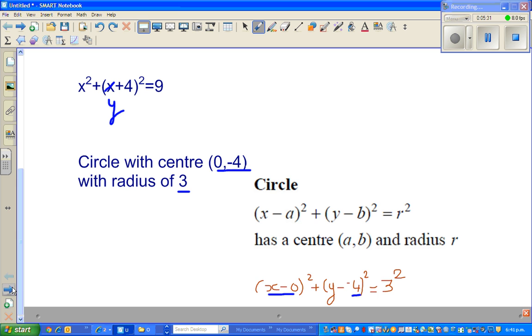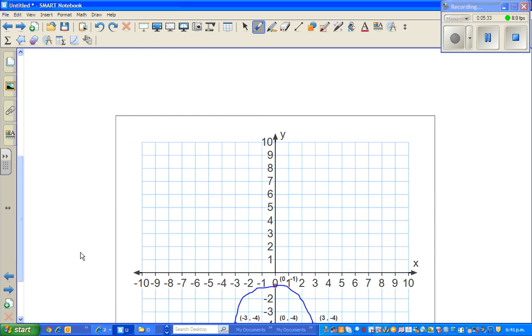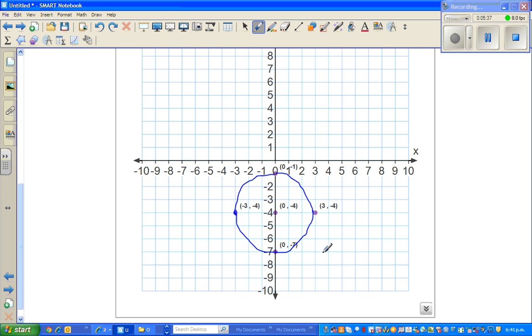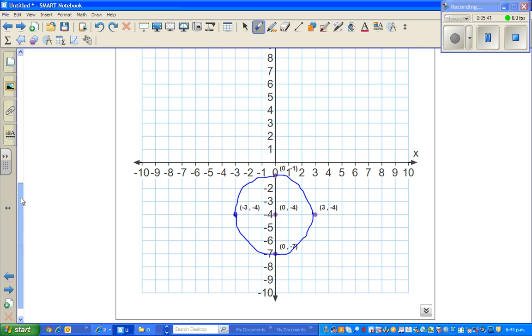Now, this is, I've used a program called Smart Maths Tool. This is the axis, x and y axis of 10 by 10. So the center is 0, negative 4. So this is your center and you've got a radius of 3.